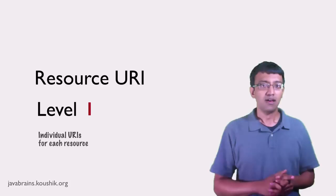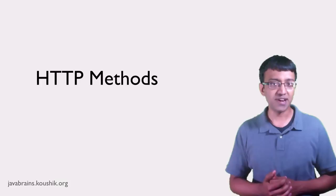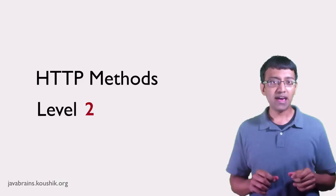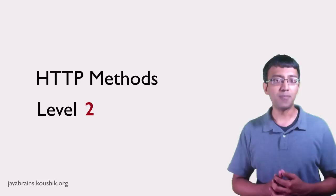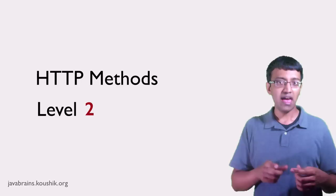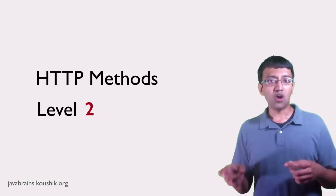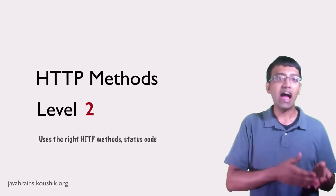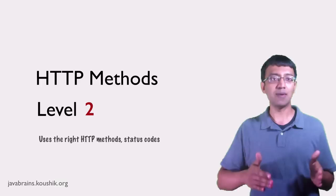If you take the next step and introduce different HTTP methods for these different operations, then you've reached level two in the Richardson Maturity Model. An API at level two uses standard HTTP methods like GET, POST, PUT, and DELETE to perform different operations on the resource URIs. The URI specifies the resource being operated upon and the HTTP method specifies what that operation is. There also needs to be proper use of HTTP status codes and the right use of idempotent and non-idempotent methods for an API to be considered at level two.